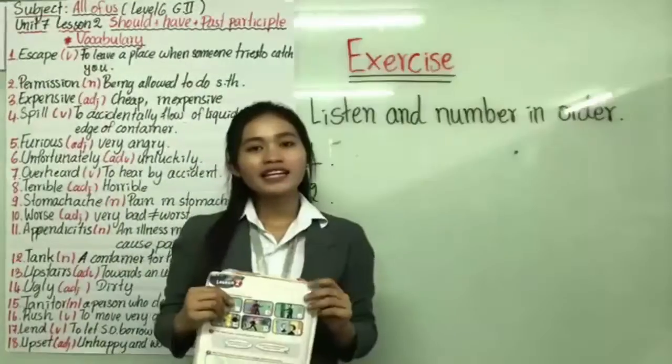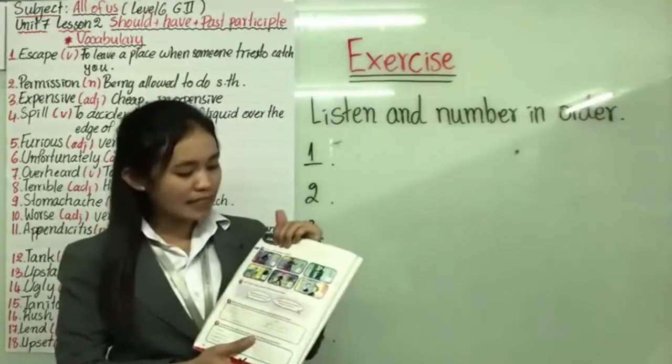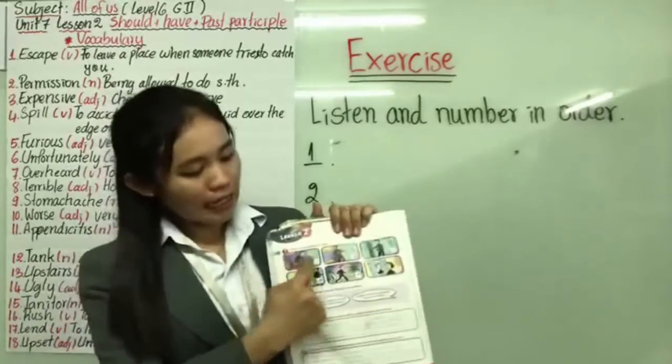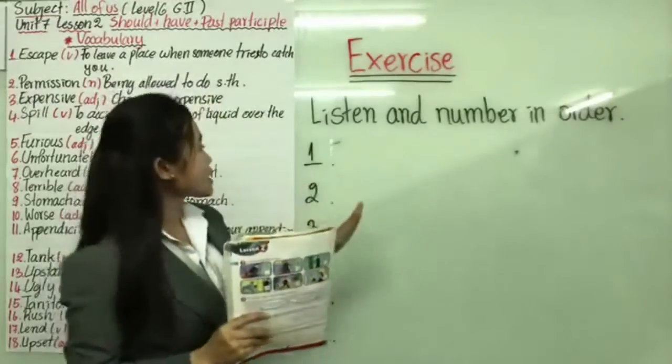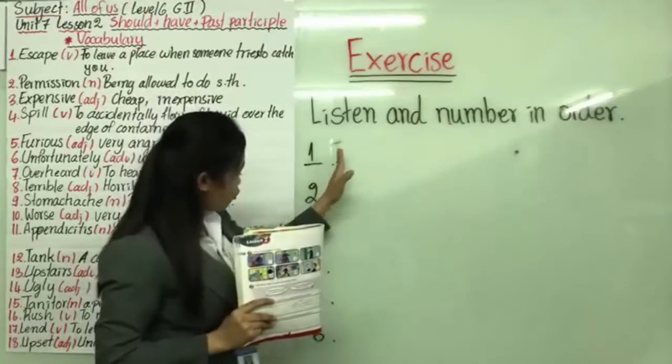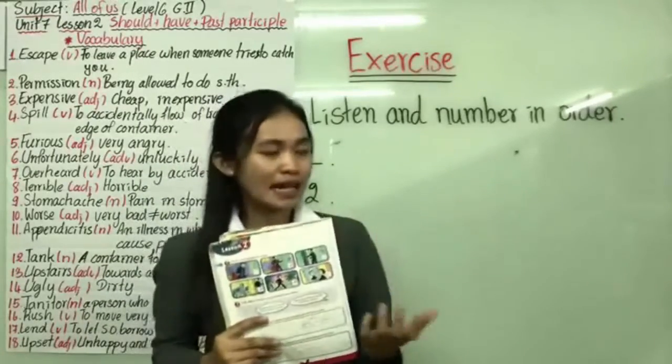Okay, so now it's time to do the exercise. In this exercise, you have to listen and put numbers in order. In our picture, we have six pictures: number one, number two, number three, four, five, and six. And you have to listen and put all these pictures in order. So we have order from one until six. So you have to listen for two minutes. Okay, so let's start listening together.